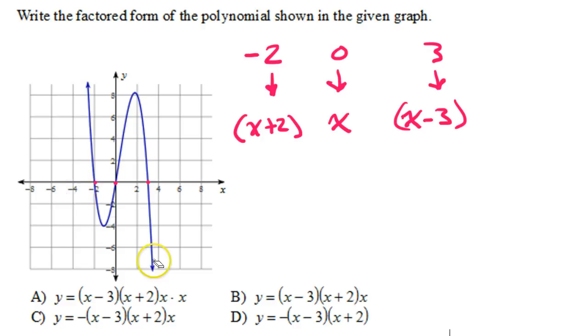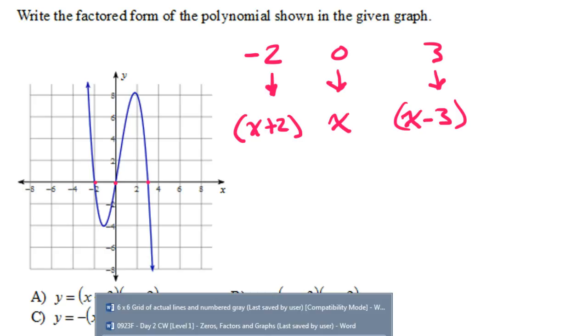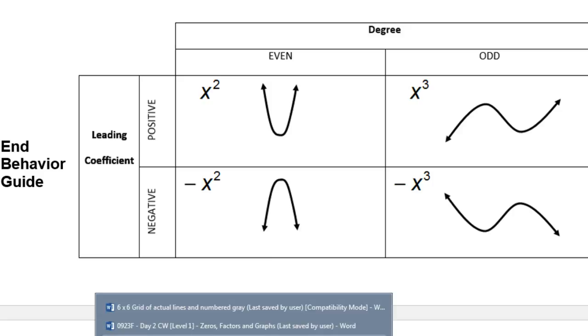Hopefully, you know that this is the graph of an odd degree function. We're talking about end behavior. If the degree is even, either both arms are up, which means positive leading coefficient, or both arms are down, that's negative. Clearly, that's not what's happening here, because in our graph here, we have one arm up and one arm down.